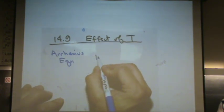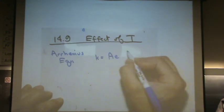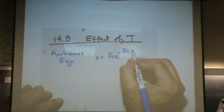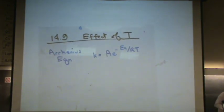And that's K, the rate constant, same K as before, Ae to the minus activation energy, Ea over RT.